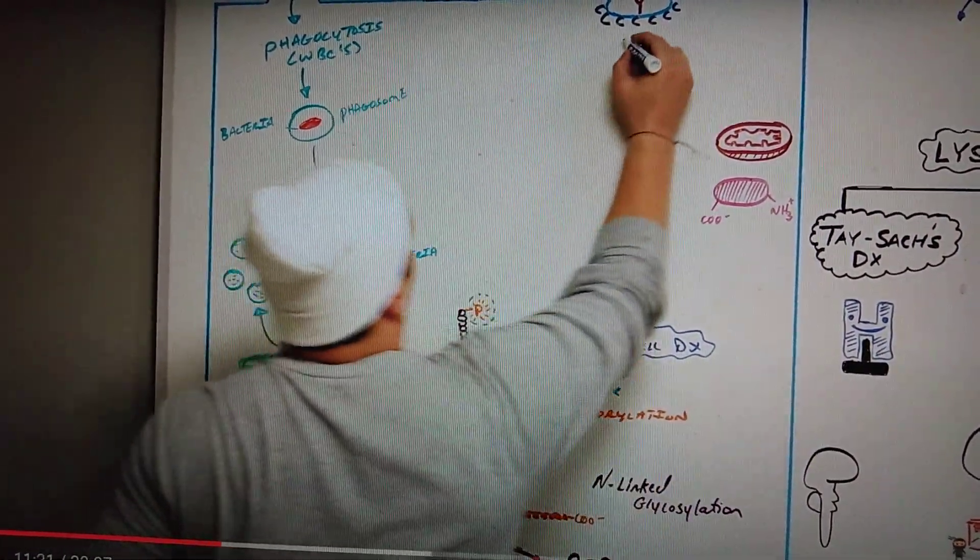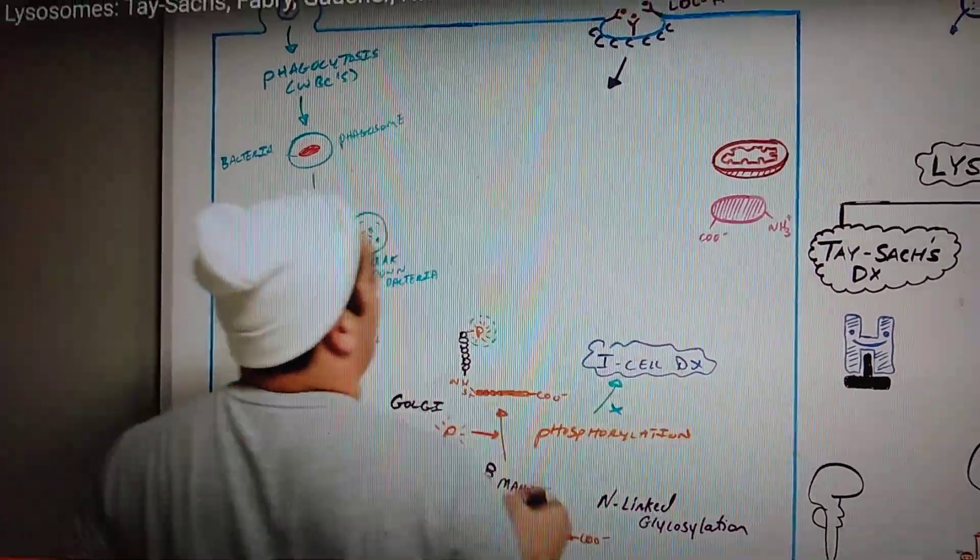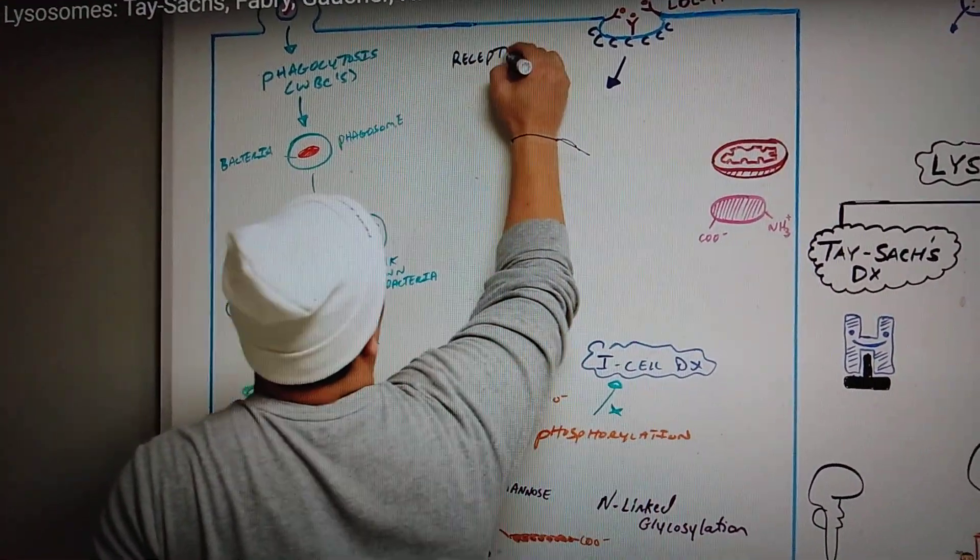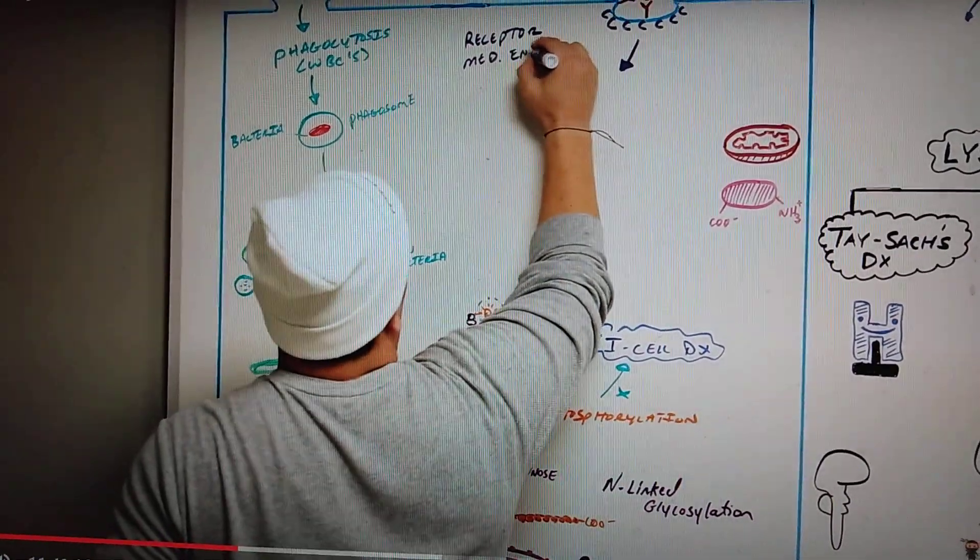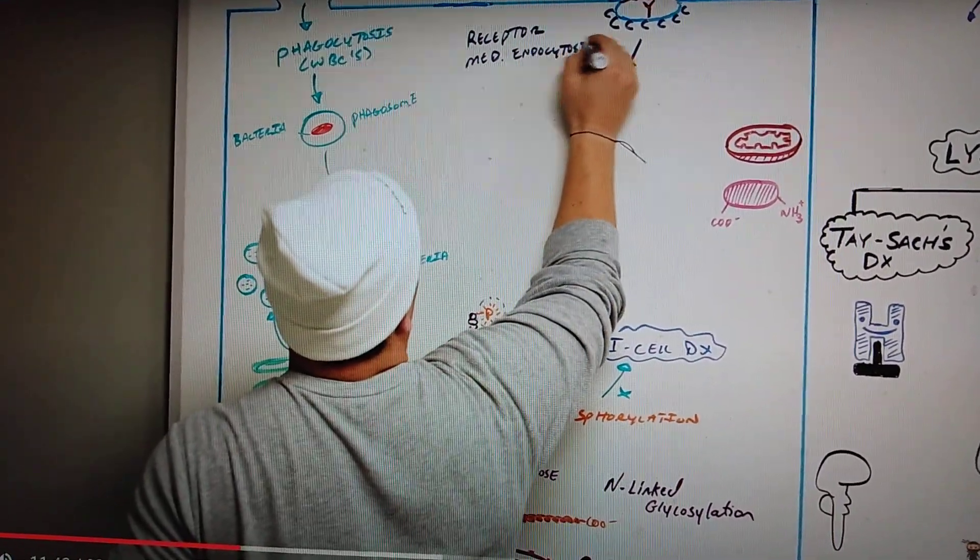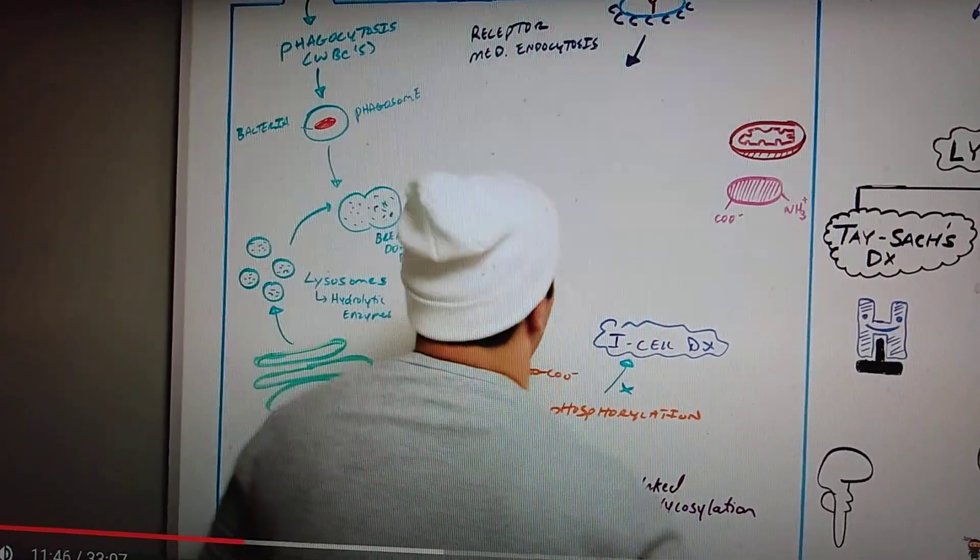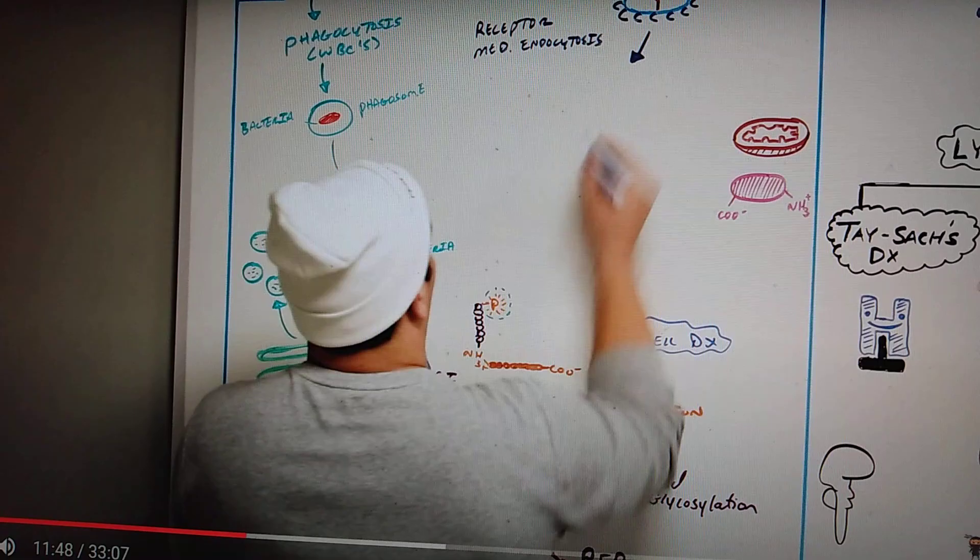So then look what will happen as a result of this through this process of what is it called, receptor mediated endocytosis. We're going to take in this little structure here. So now we're gonna have a vesicle.